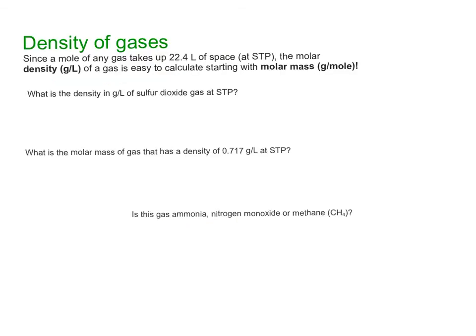Since a mole of any gas takes up 22.4 liters of space, that's our volume, we can easily get molar density because we have the mass and we have the volume. We combine those two things together and we get density. It sounds really scary, but it is pretty simple considering that we have the molar mass, the grams per mole, off our periodic tables.